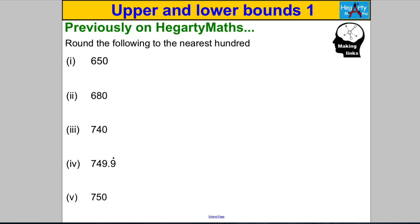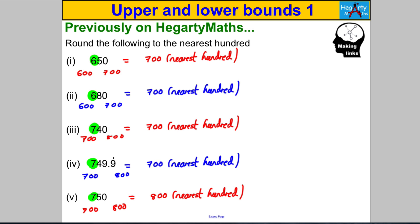Pause the video and try these examples — it's very important you do that. Round the following to the nearest hundred. You should have got: the first one rounded to 700, the next 700, the next 700, the next 700, and the last one, because it was a 5, rounds up to 800.